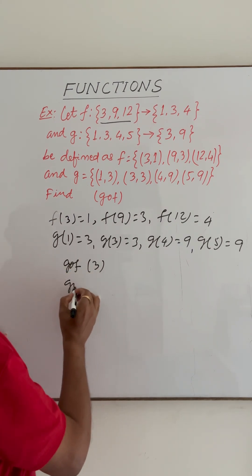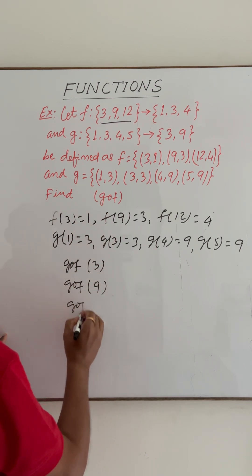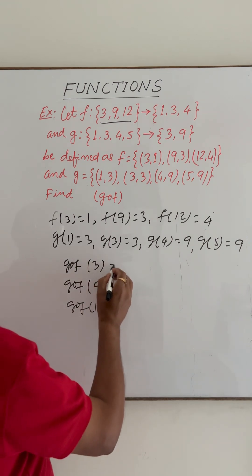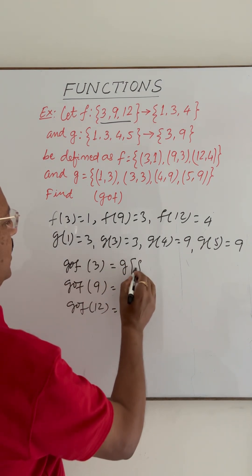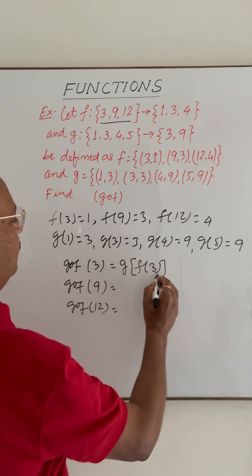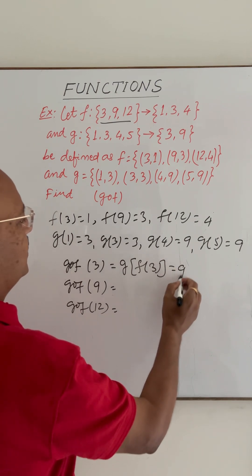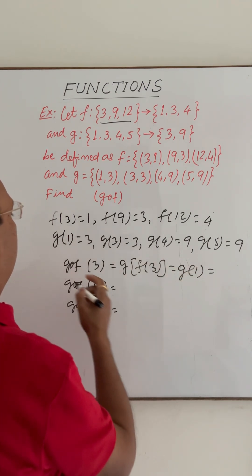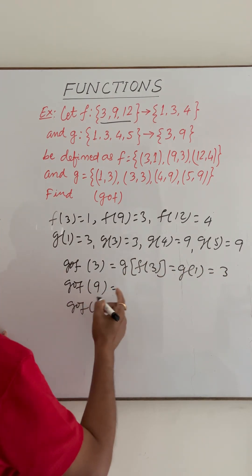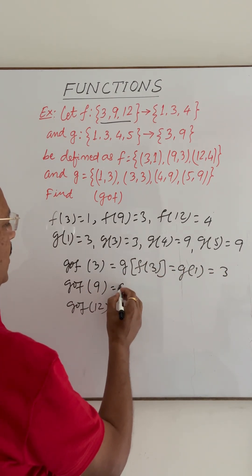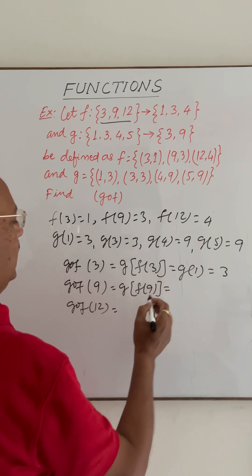g∘f(3) can be written as g(f(3)). Since f(3) = 1, this becomes g(1), and g(1) = 3. Now g∘f(9) can be written as g(f(9)).